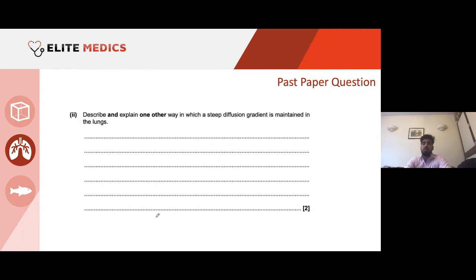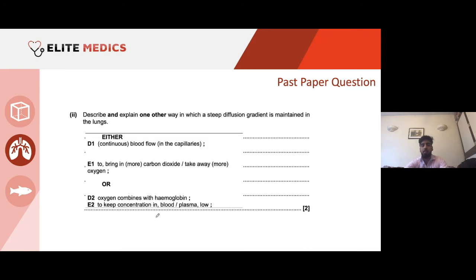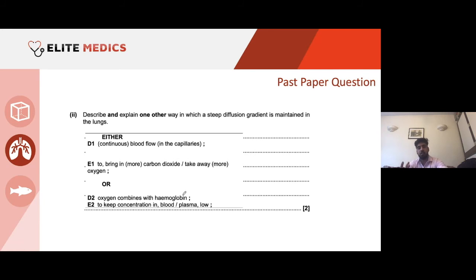Describe and explain one other way in which a steep diffusion gradient is maintained. Here we talk about blood supply — continuous blood flow in the capillaries, bringing more CO2 to the alveoli and taking away more oxygen. You could also talk about oxygen combining with haemoglobin — that globular protein of four subunits. It combines with oxygen at high partial pressures and takes it to areas of low partial pressure. By combining haemoglobin with oxygen, we keep the concentration of oxygen in the blood quite low, so more O2 can diffuse from the alveolus into the blood.